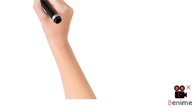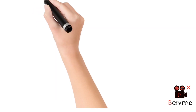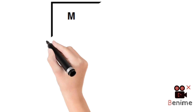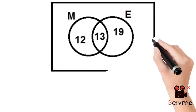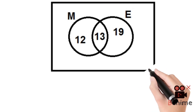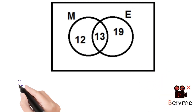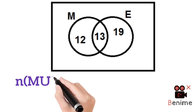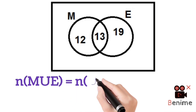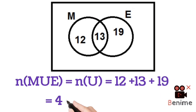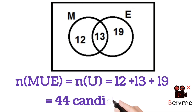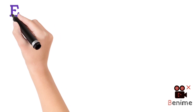This is the Venn diagram that represents the given information. In the diagram, we have two circles, one for Mathematics and the other for English. On the intersection, we have 13, while on the circle for M we have 12 and 13 — the sum gives 25. On the one for English, we have 19 and 13 — the sum gives 32.